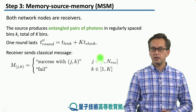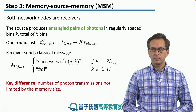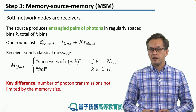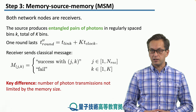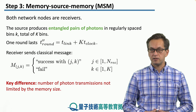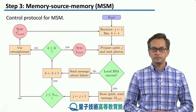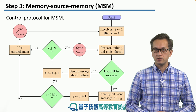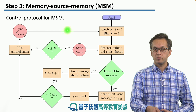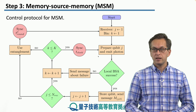Here, j is indexing the memory of the receiver and k is indexing the photon. The key difference is that previously the number of photons used to try and establish an entangled link was limited by the number of memories at the sender node. Here, the photons are produced by the source and we are not limited by the number of memories anymore. This is the control protocol for the MSM link architecture. It's very similar to the MM link architecture, except we replaced index i, indexing the number of photons, with index k, which runs over the number of bins.